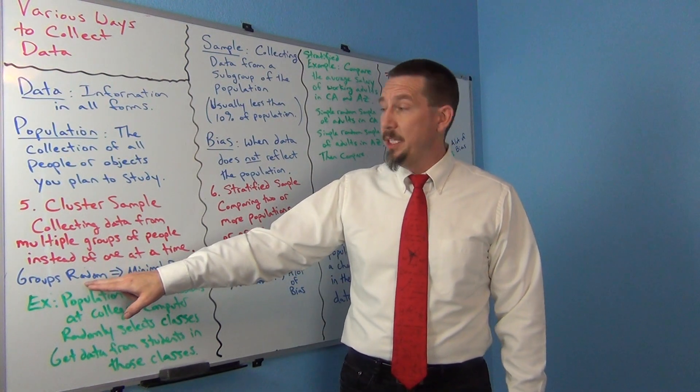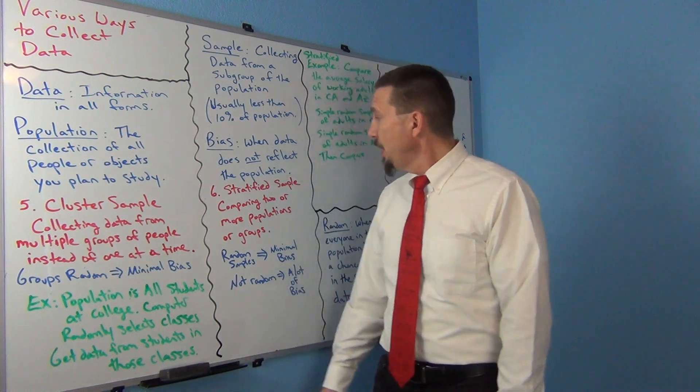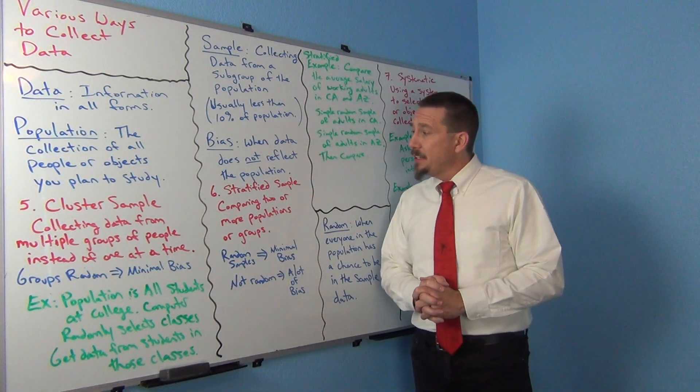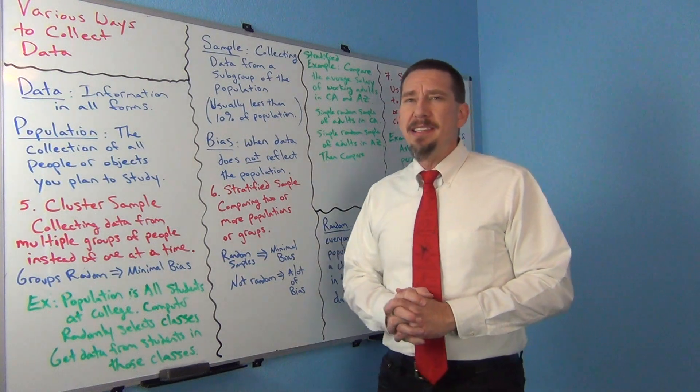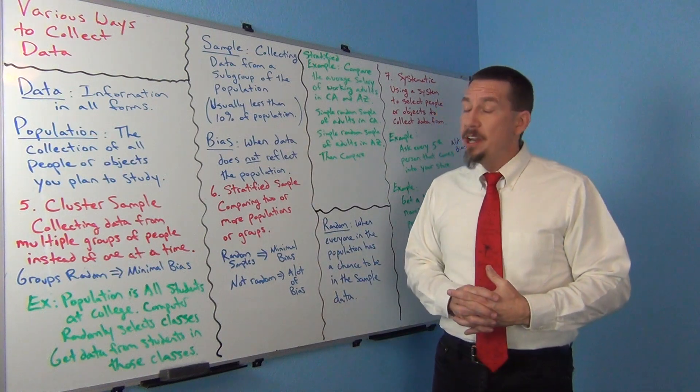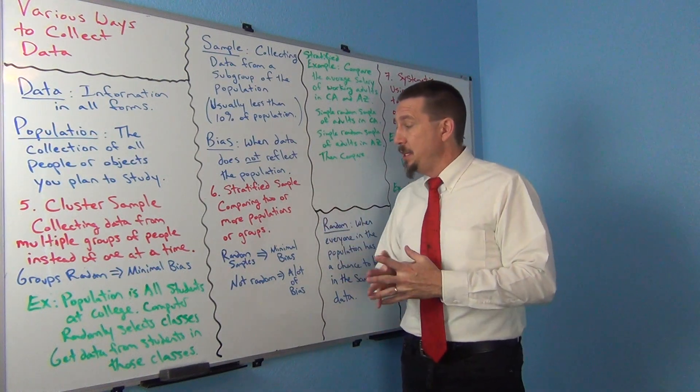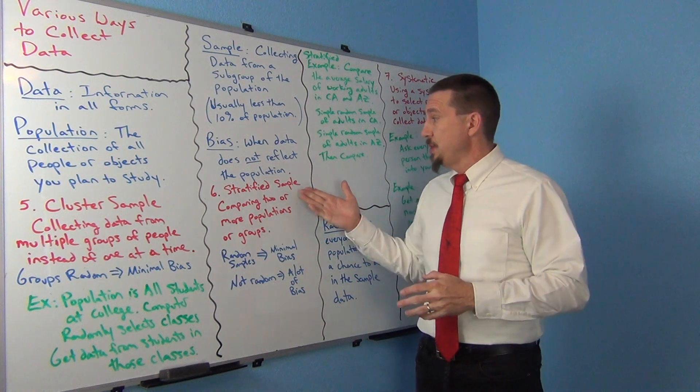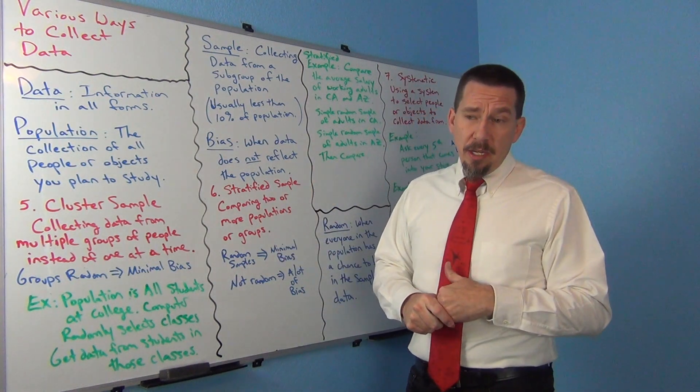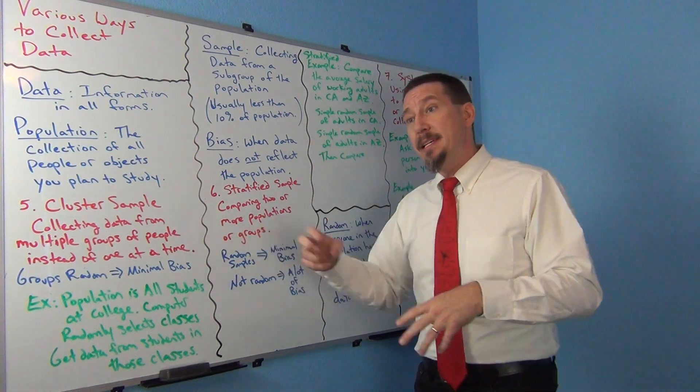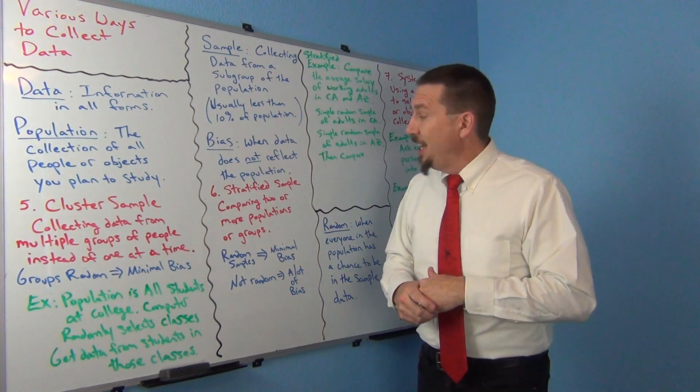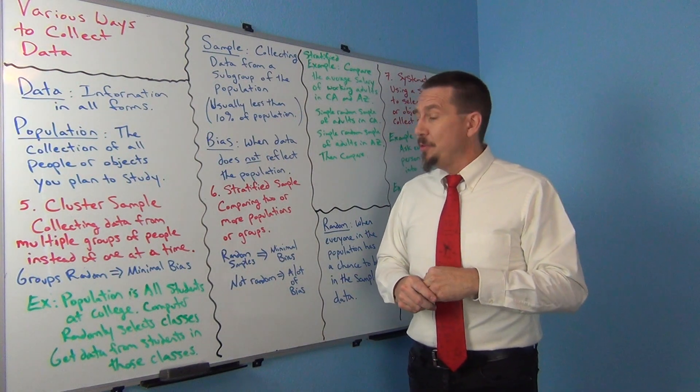So remember we do want the groups to be chosen randomly. That's real key. Number six is another method, sometimes called a stratified sample. A stratified sample is a comparison study. It's one of the most common studies we do in statistics. We're always trying to compare like people that took the medicine to people that took the placebo. We're trying to compare people from one state with another.